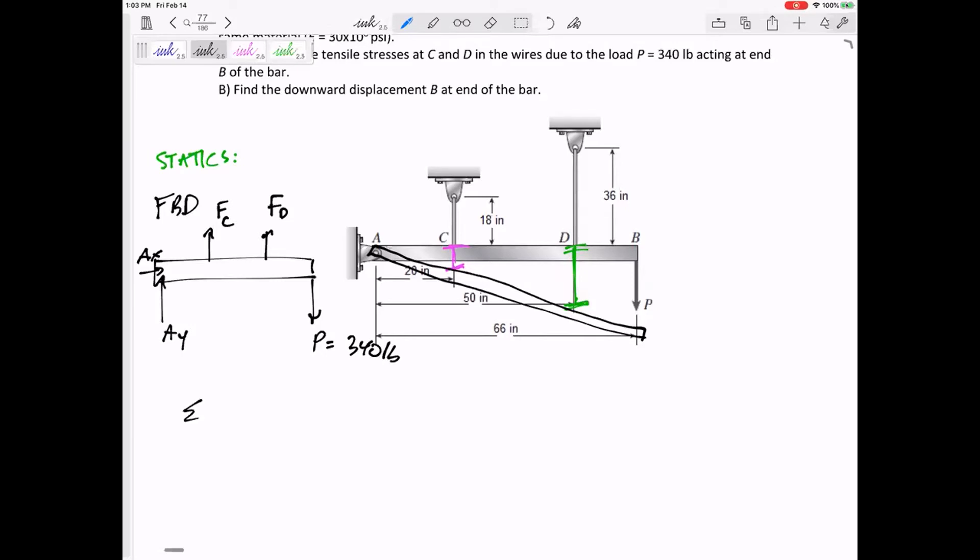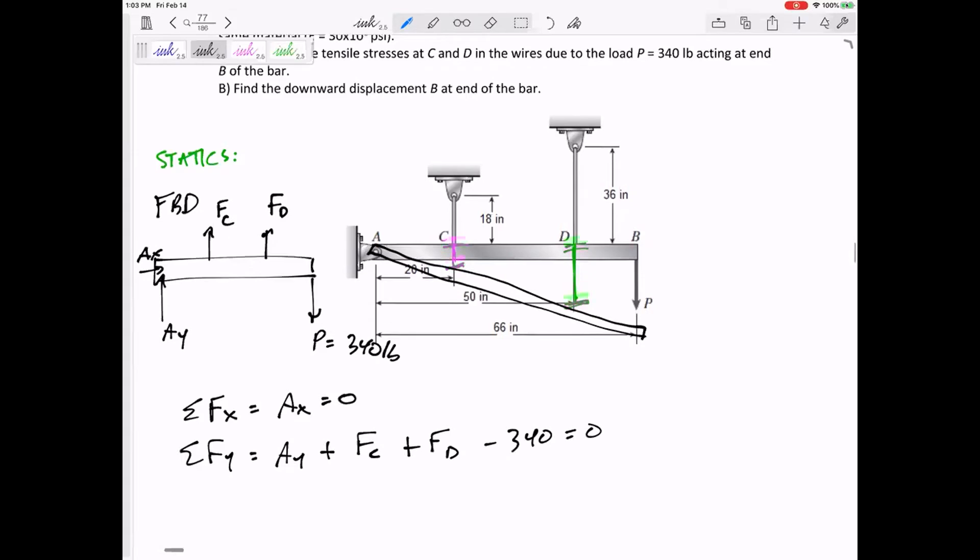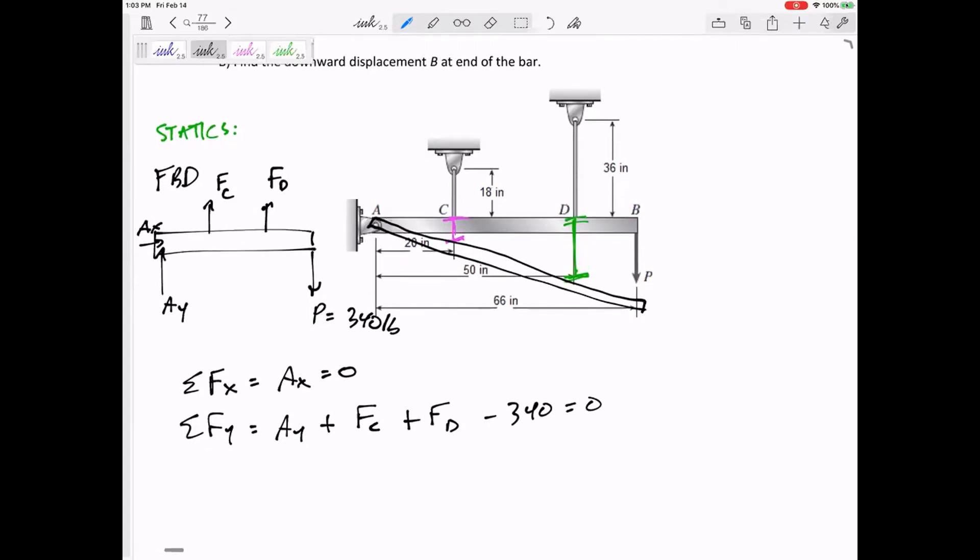So I'm starting with statics. I like to sum the forces. Summing the force in X doesn't help me. I sum the forces in Y: AY, FC in tension, FD in tension, minus 340 equals zero. So there's one equation.